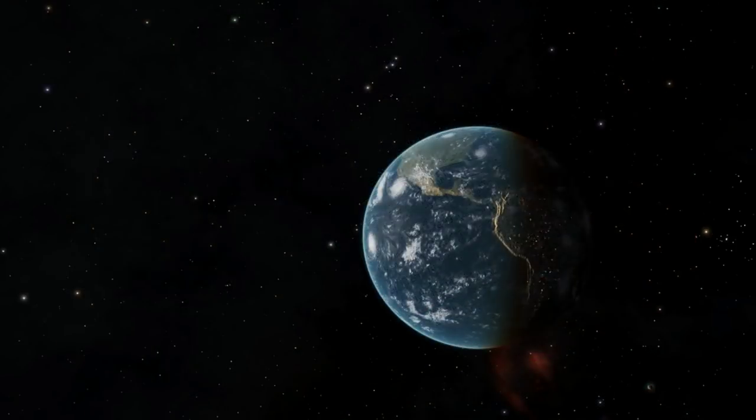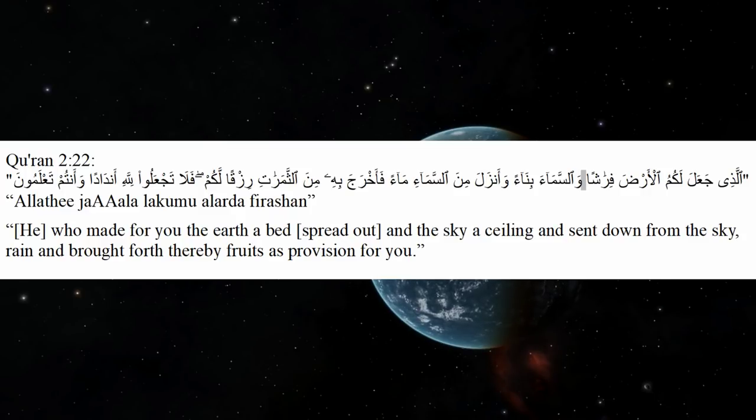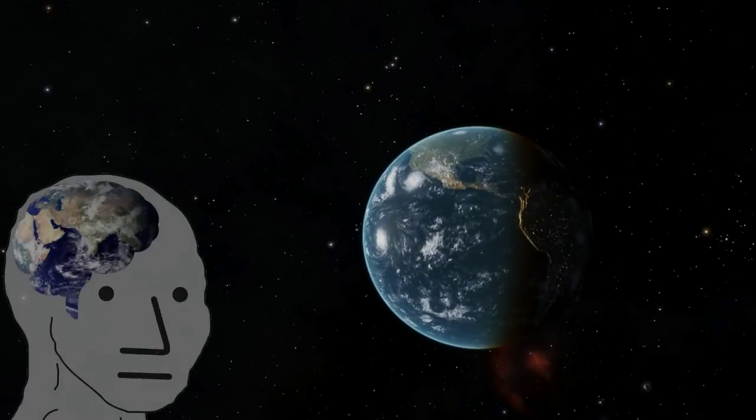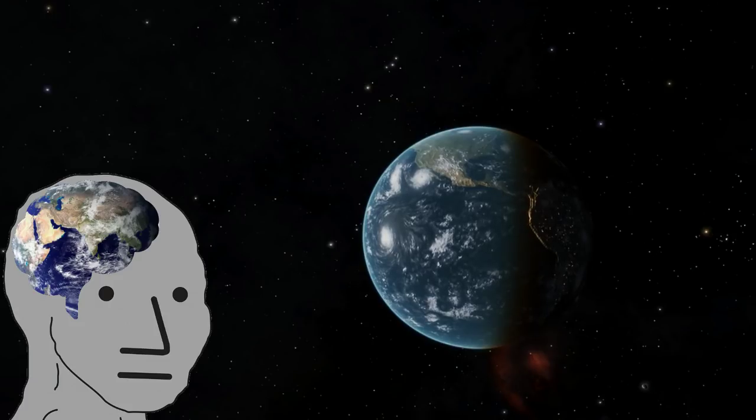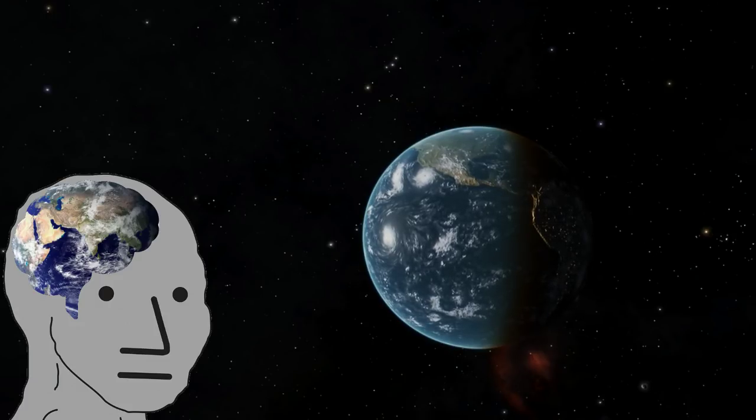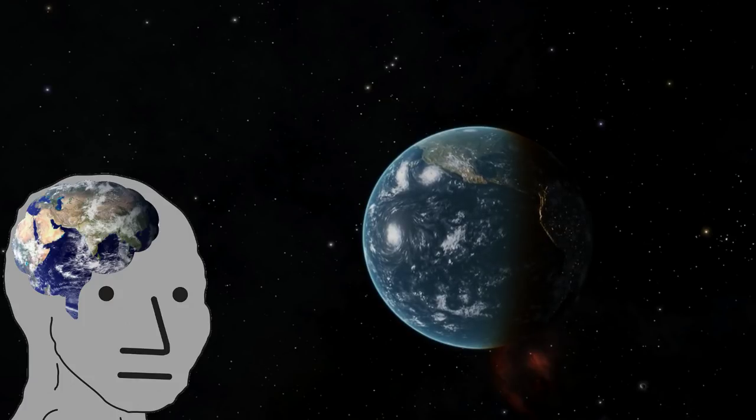So let's take a look at the first verse that's said to support a flat earth. Quran 2:22: 'He who made for you the earth of bed spread out and the sky a ceiling and sent down from the sky rain and brought forth thereby fruits as provision for you.' Now I'm gonna be honest, I'm not seeing it yet. This just sounds like poetic language to describe our everyday visual experience.